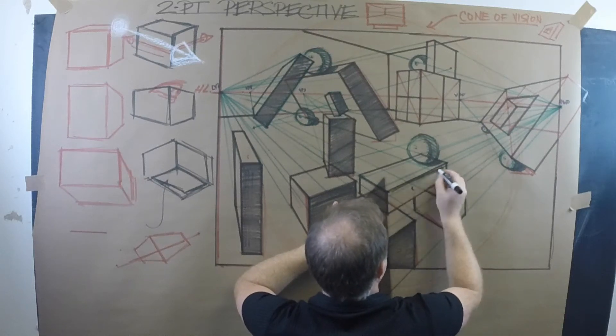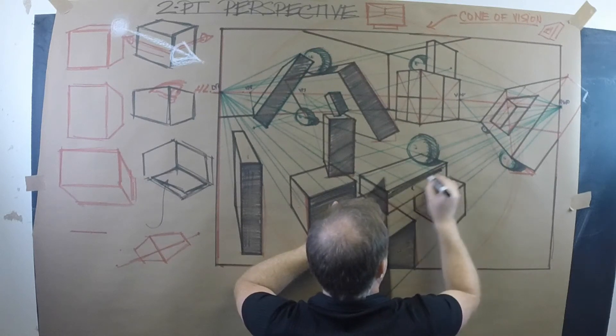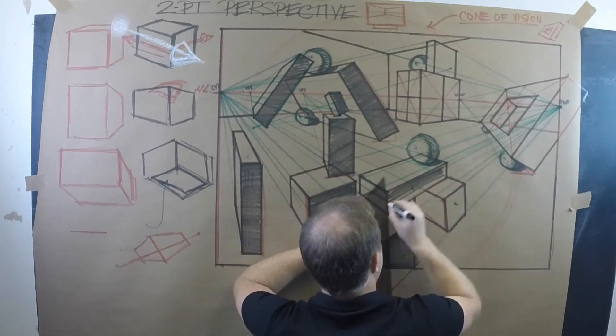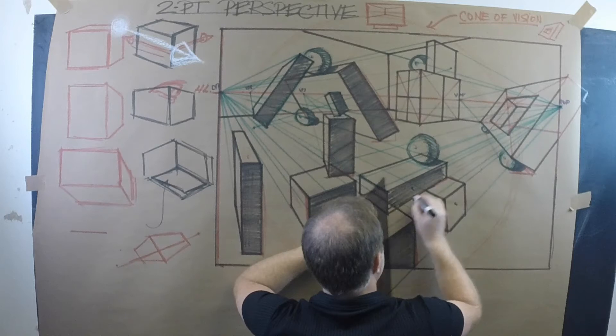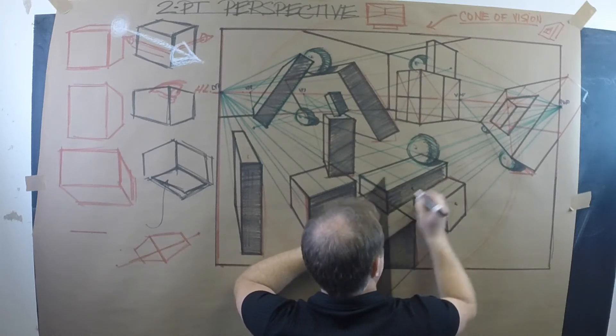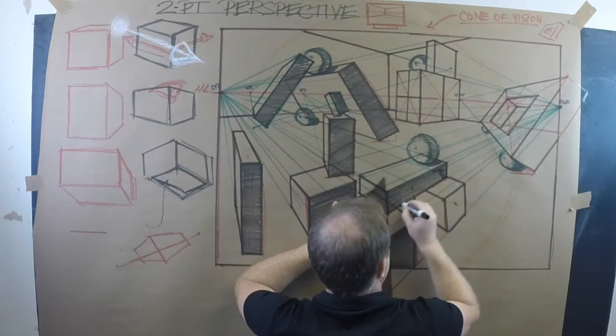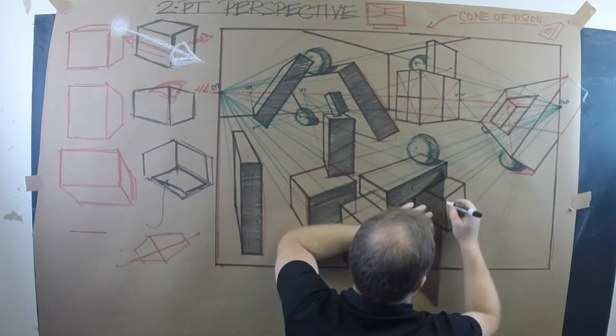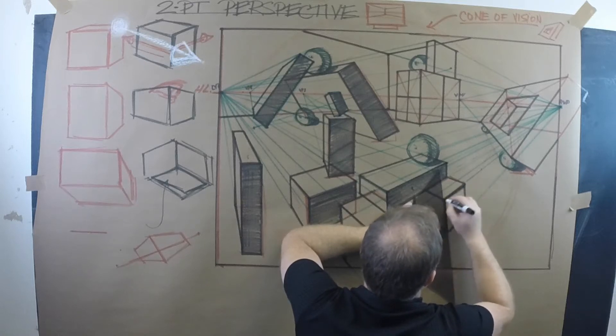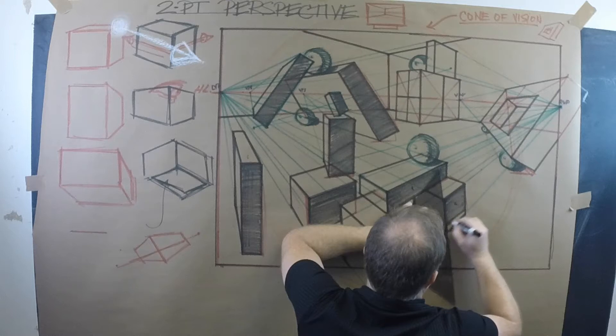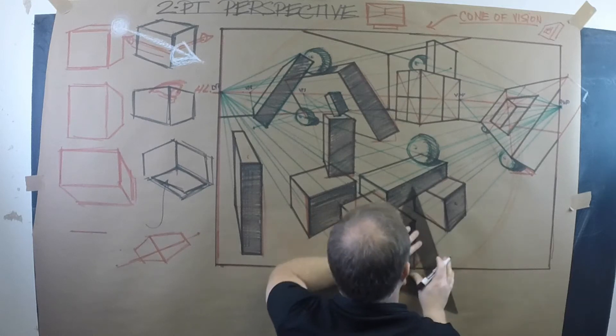Shading it back to the vanishing point. Always thinking about when I have depth, thinking about moving it, feeling that go back in space. And I'm going to tighten this up and shade this back on over through here. There we go.